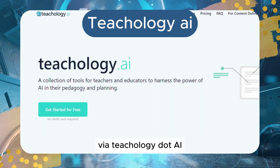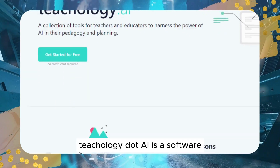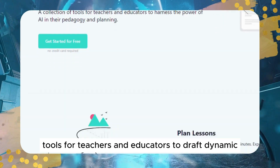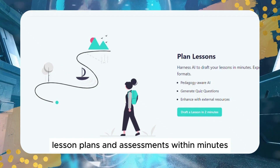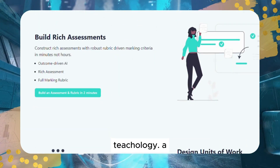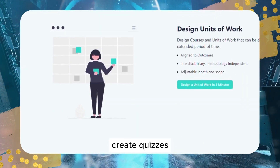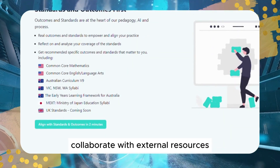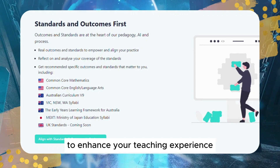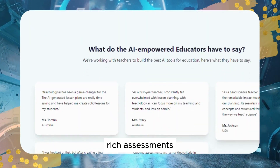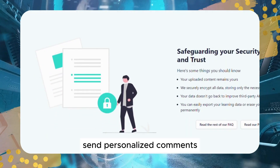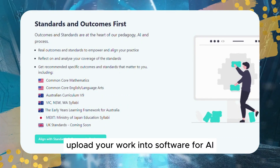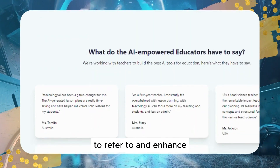Tool #6: Teachology.ai. Teachology.ai is a software for lesson planning that provides a group of AI tools for teachers and educators to draft dynamic lesson plans and assessments within minutes. Best features include: create quizzes suited to your lessons; collaboration features to work with external resources; generate content-rich assessments; feedback features to send personalized comments to students; and lesson plan enhancement features — upload your work into the software for AI to refer to and enhance your lesson plans.